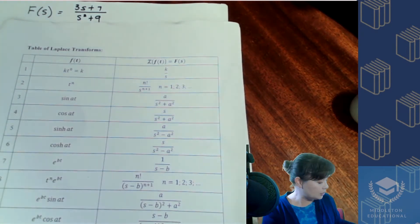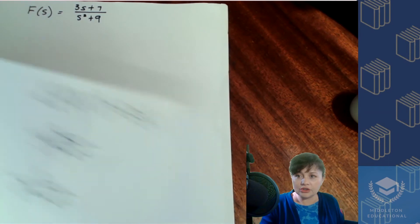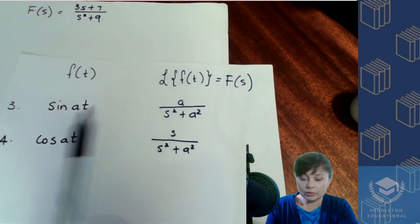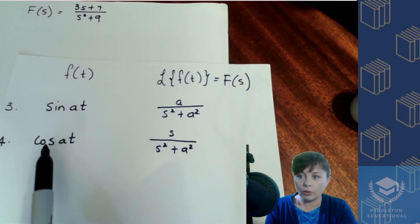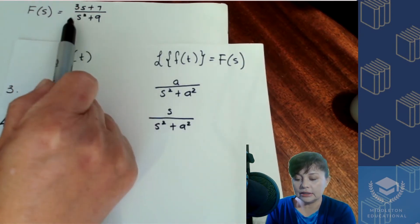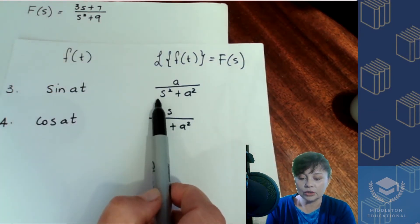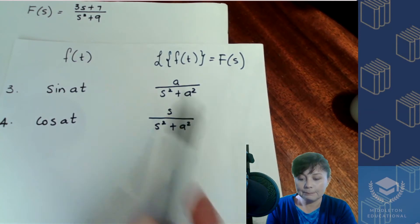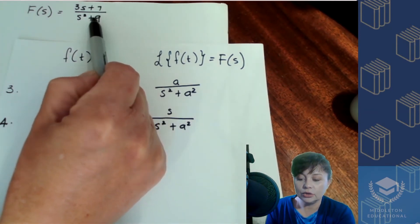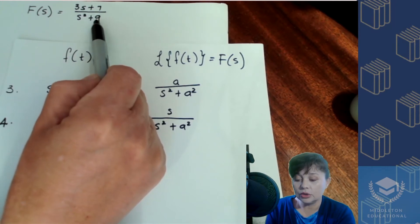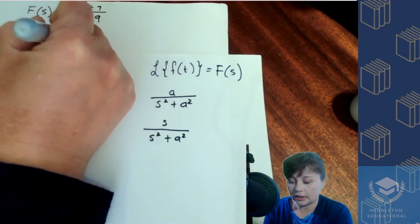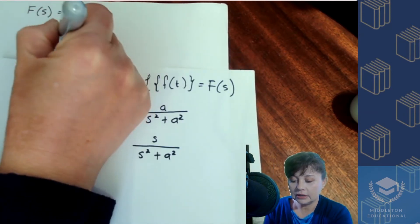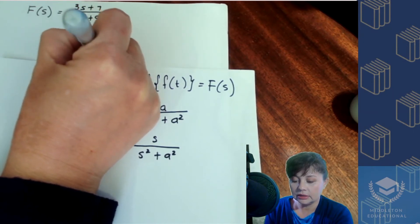I've written it out on a separate page so it's easier to see, since the print is quite small. It's going to be either number three or number four. Comparing the denominator, we have s squared plus nine, and on the formula sheet it's s squared plus a squared. If we express nine as a perfect square, it becomes three squared, so we can rewrite the expression as three s plus seven over s squared plus three squared.